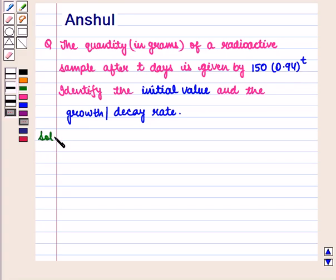Let us start with the solution of this question. In this question, we are given the quantity in grams of a radioactive sample after T days, which is given by the function 150 times 0.94 raised to power T, which is an exponential function.